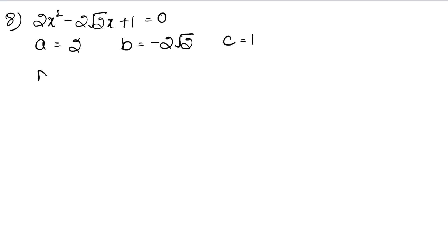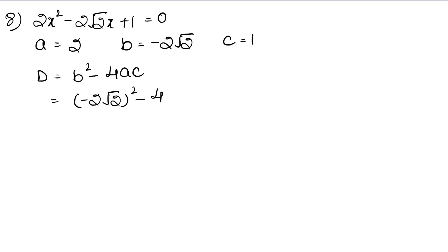Now we calculate the discriminant D. The formula for D is B² minus 4AC. Here B is minus 2√2, so we compute: (minus 2√2)² minus 4 times A times C, where A is 2 and C is 1.